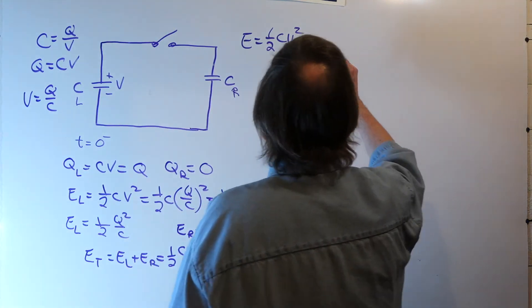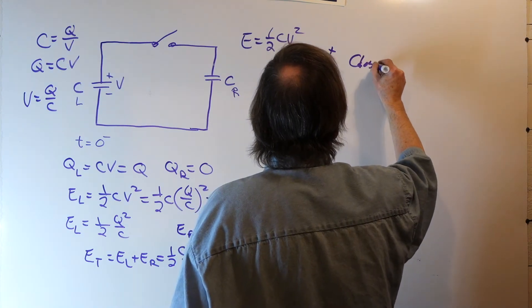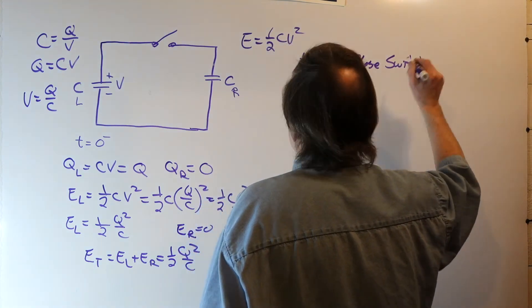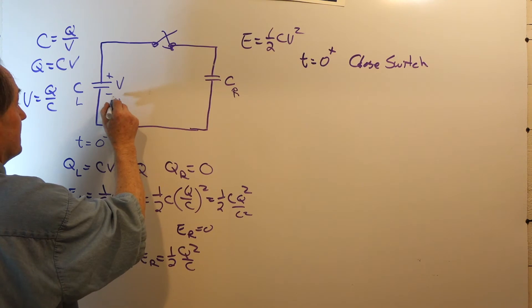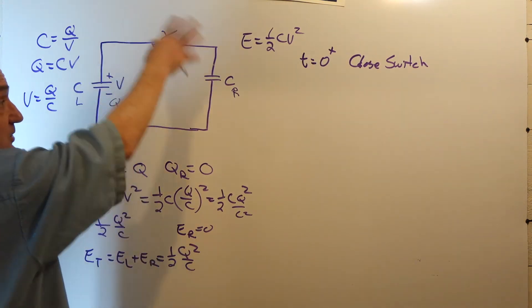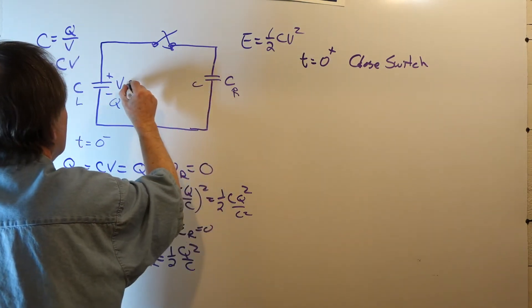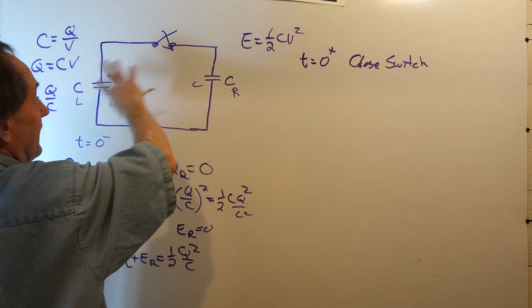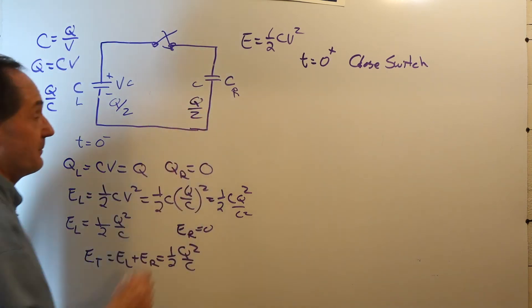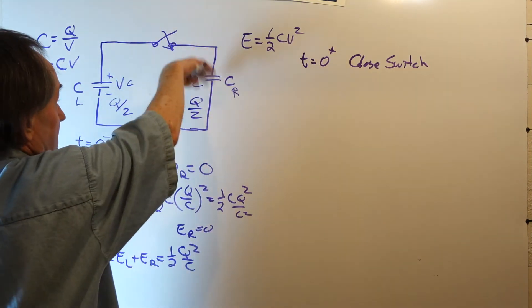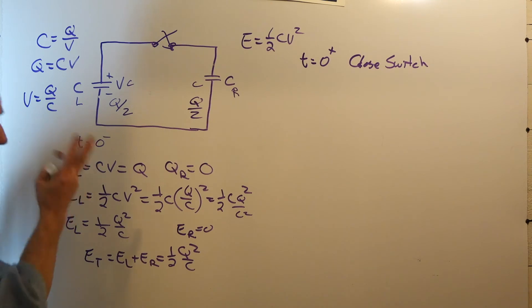Now at T equals zero plus, we close the switch. What happens? We had initially a charge Q on the left capacitor, but the charge is going to redistribute itself. Since the capacitances are the same, the charge divides evenly — we'll have Q over 2 on the left capacitor and Q over 2 on the right capacitor after everything settles.